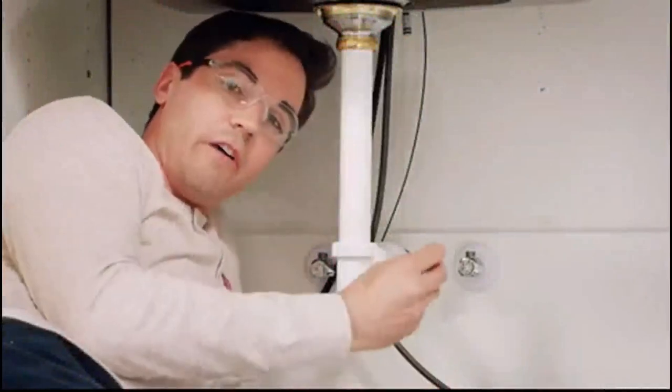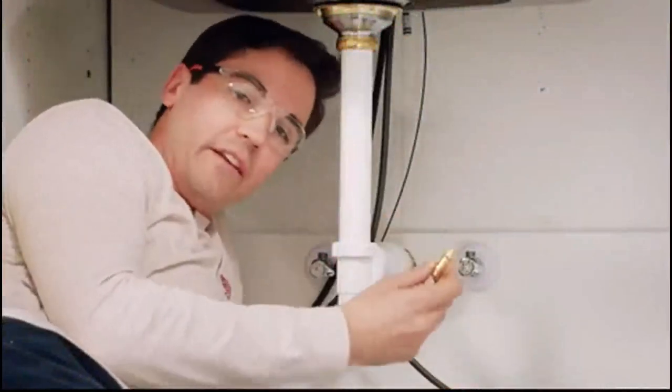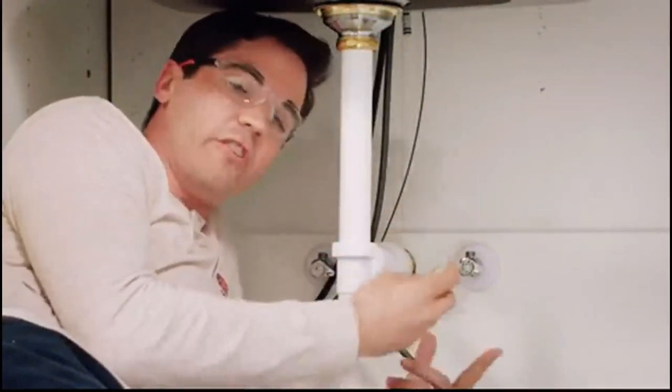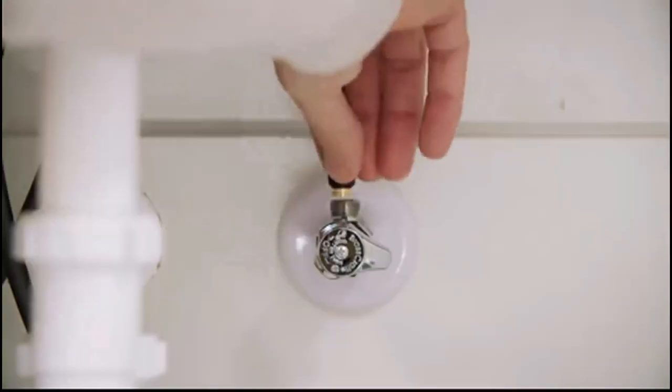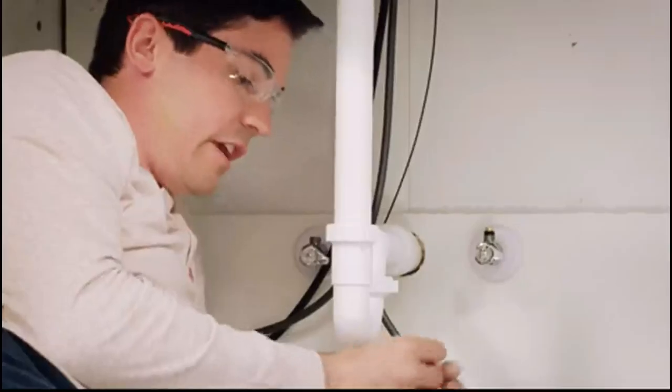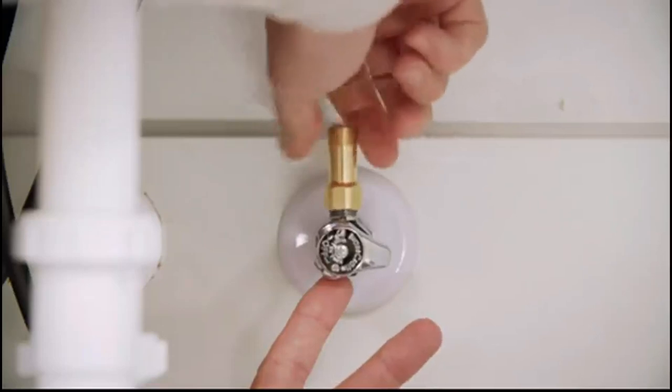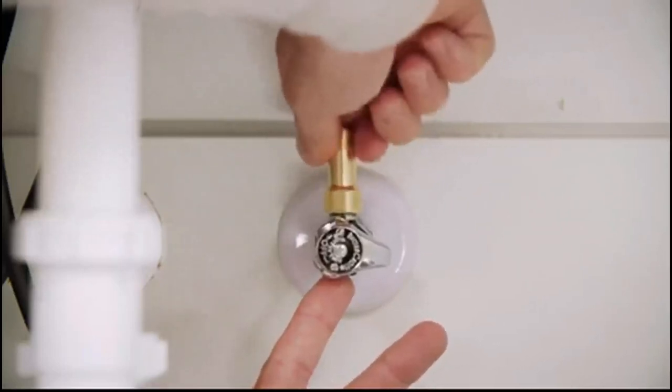Next, we're going to install our check valves onto our supply stub outs. Now, I'm going to spare you the science and details behind why these are so important, but just know that they are required for the function of your Touch 2.0 faucet. To do so, we're going to begin by taking this little insert and seating it right down at the top of your supply. And then threading on the check valve over the top of it. You want to make sure nothing's pinched. And just hand thread it down onto that supply.